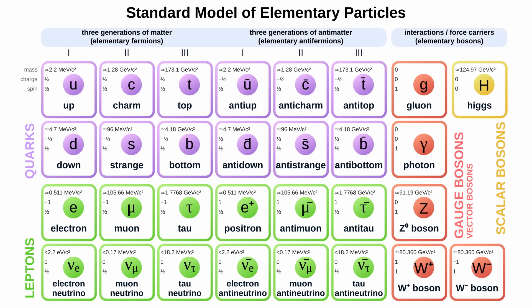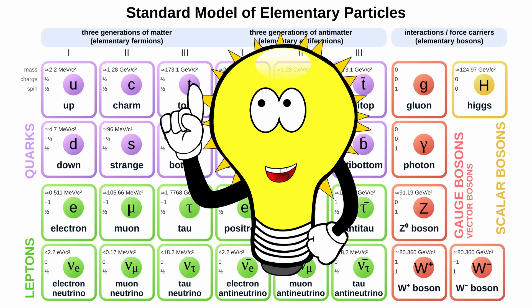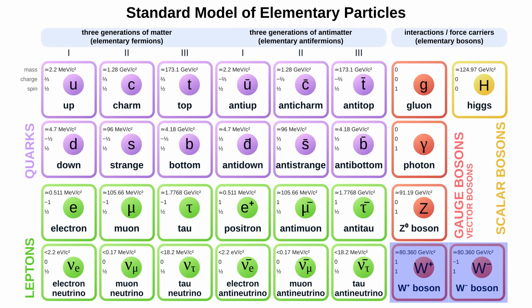The standard model of particle physics is arguably the most successful scientific theory ever developed. It predicted the existence and properties of many particles that were later discovered, including the W boson, Z boson, gluon, top quark, and charm quark. It is also responsible for predicting the Higgs mechanism and the Higgs boson, the most recent major particle discovery.